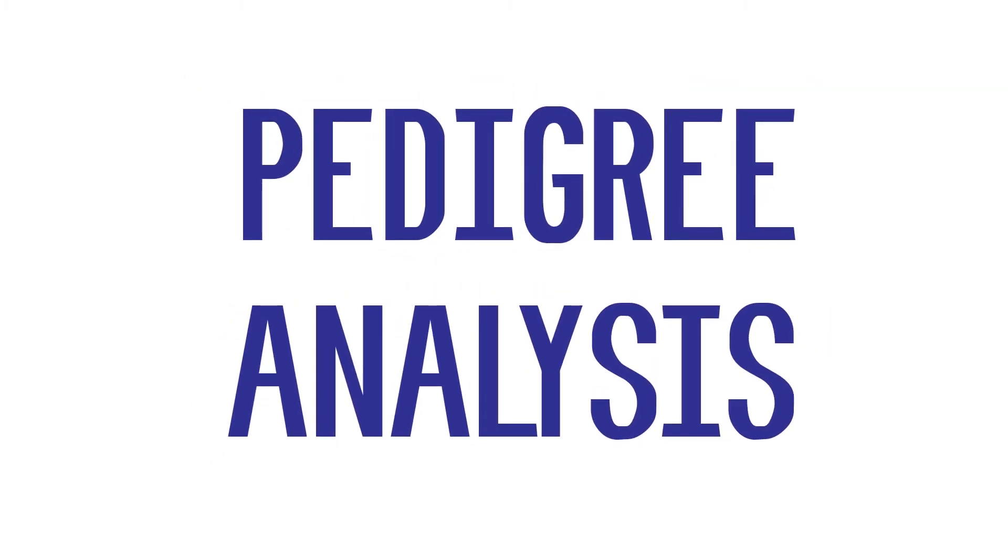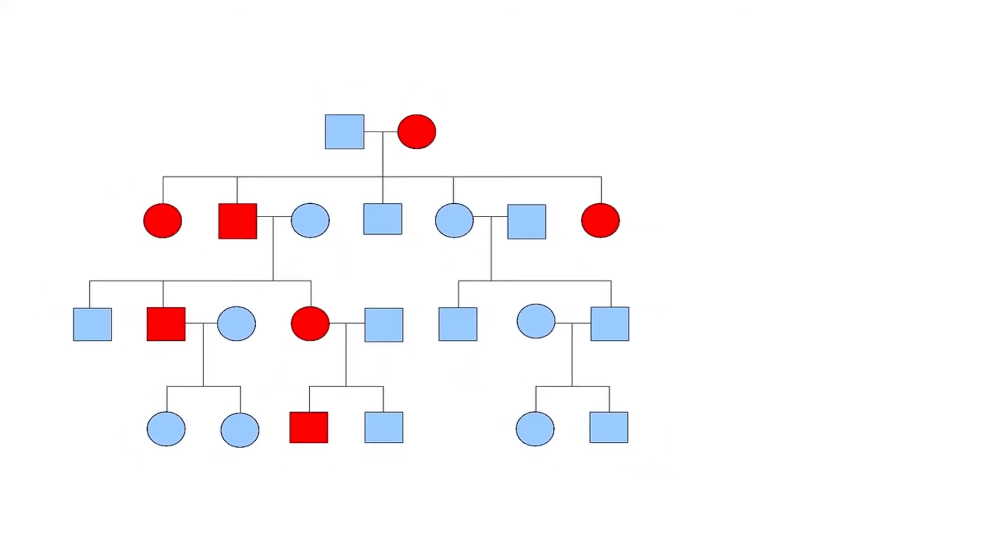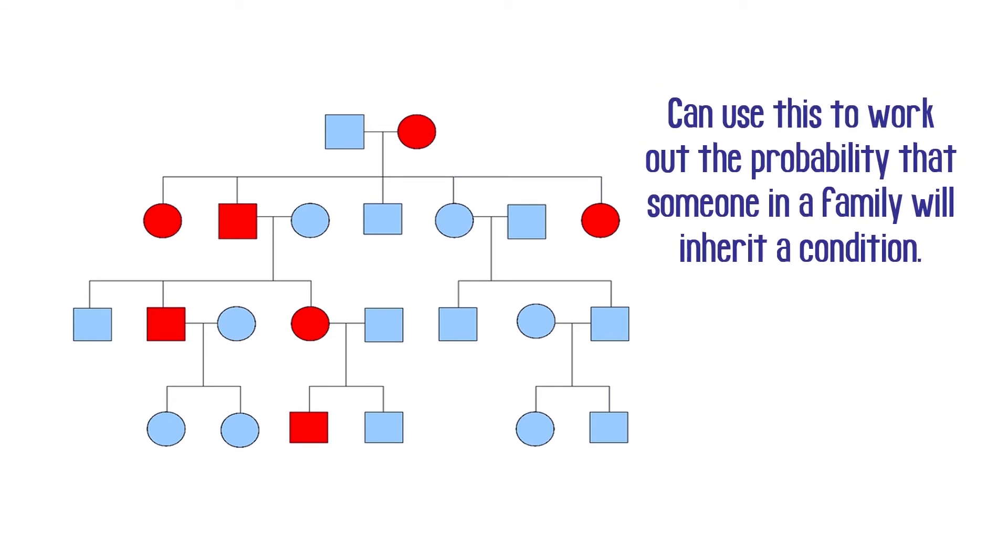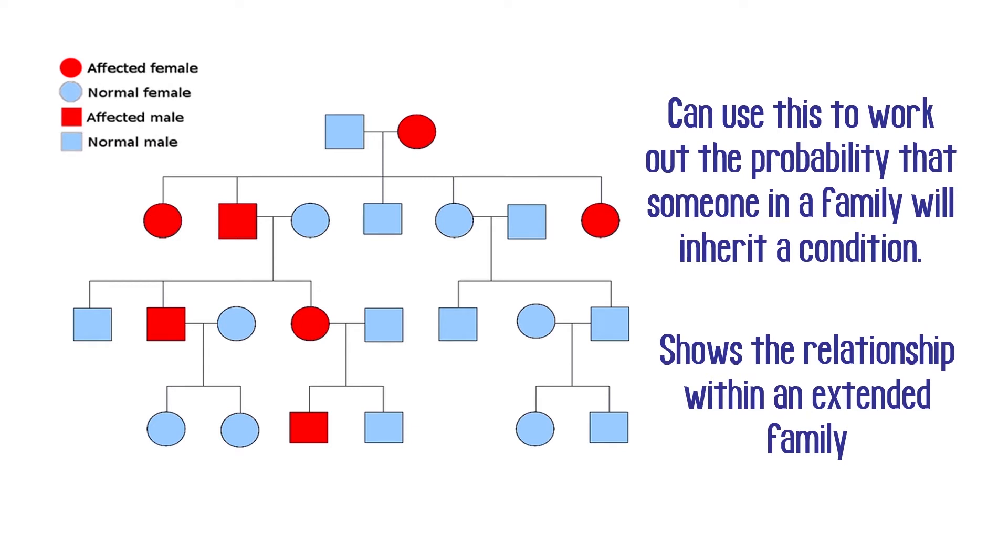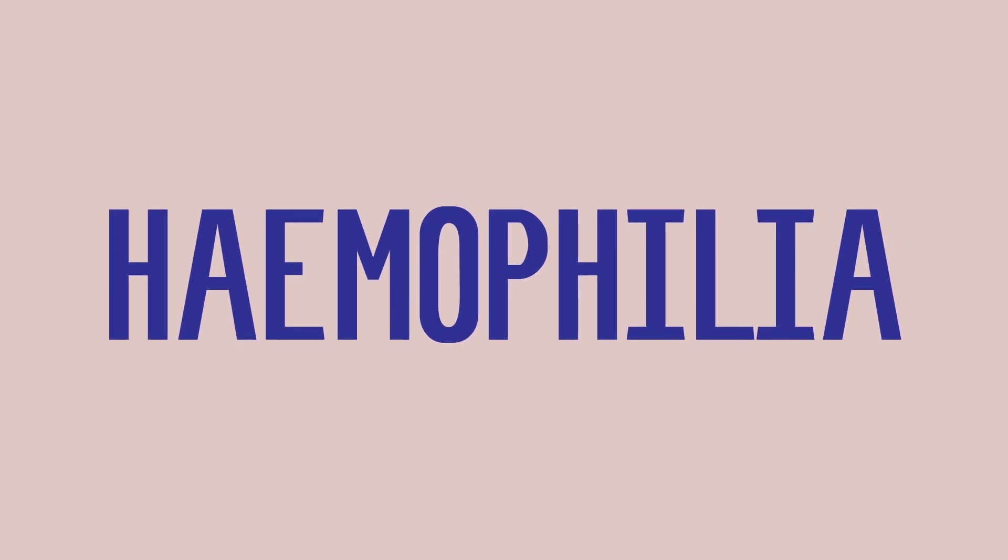Going into family trees now and looking at pedigree analysis, we see that doctors can use a pedigree analysis chart to show how genetic disorders are inherited in a family. They can use this to work out the probability that someone in a family will inherit a condition. The pedigree analysis diagram is used to show the relationship within an extended family. Males are indicated by the square shape and females are represented by circles. Affected individuals are red and unaffected are blue. Horizontal lines between males and females show that they have produced children. So let's take the example of haemophilia and create a family tree to show the inheritance of this genetic disorder.